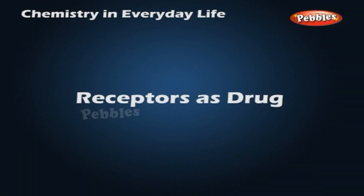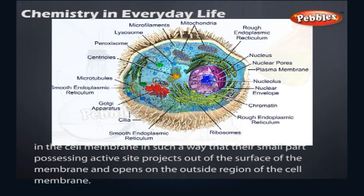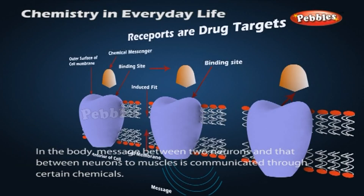Receptors are proteins that are crucial to the body's communication process. The majority of these are embedded in cell membranes. Receptor proteins are embedded in the cell membrane in such a way that their small part possessing the active site projects out of the surface of the membrane and opens on the outside region of the cell membrane. In the body, messages between two neurons and that between neurons to muscles is communicated through certain chemicals.